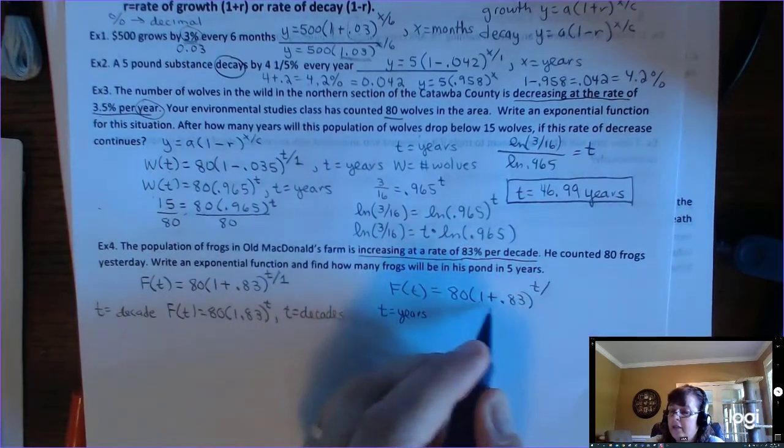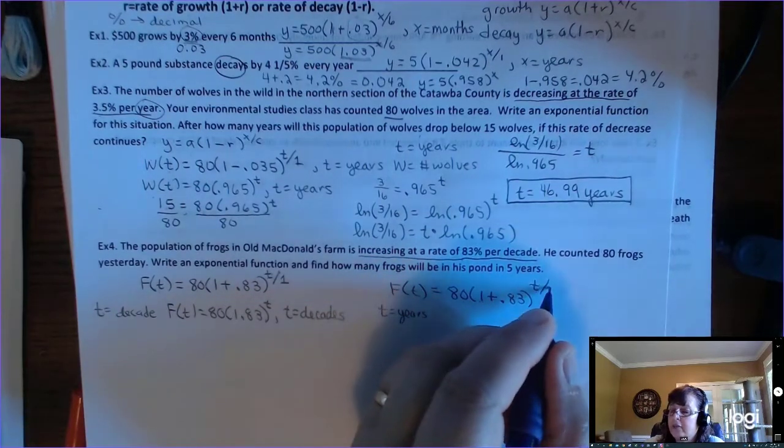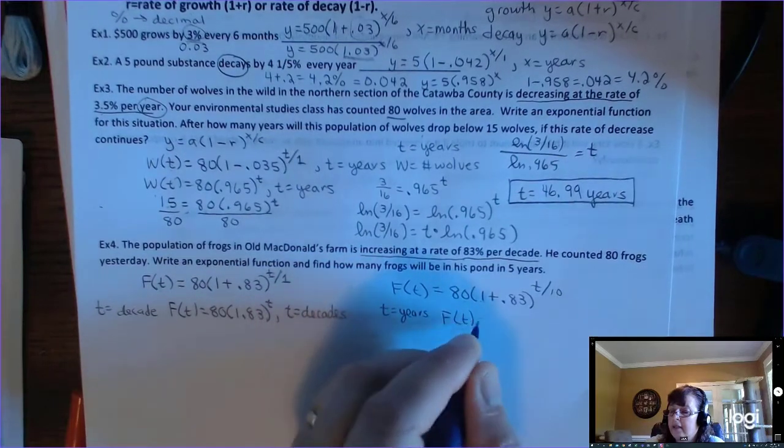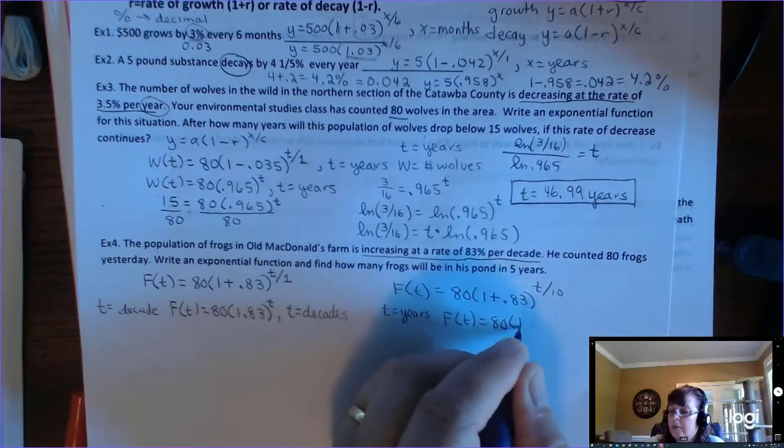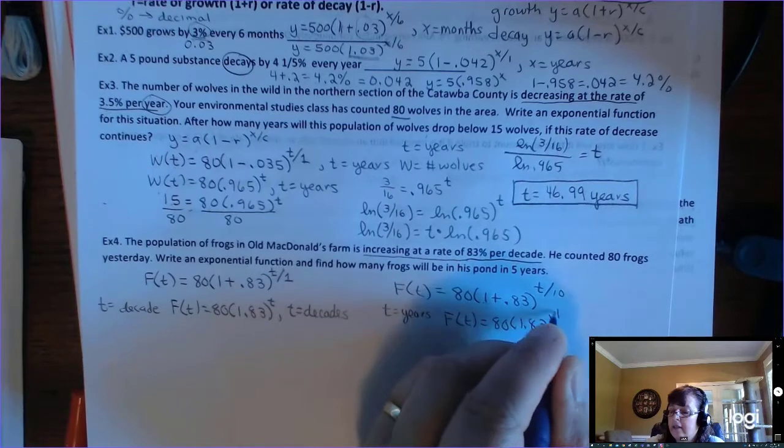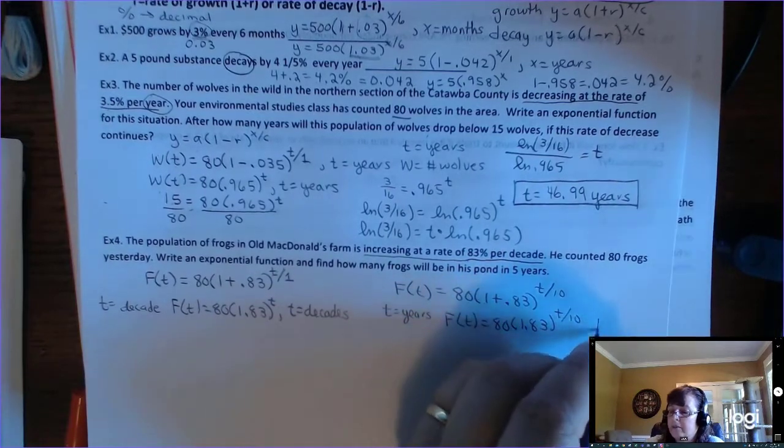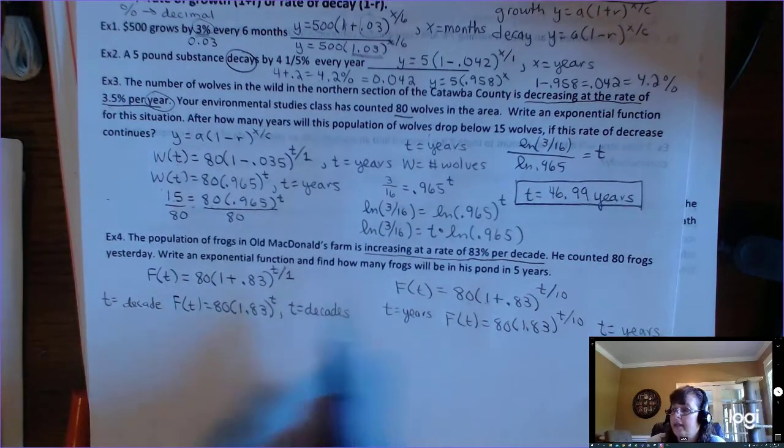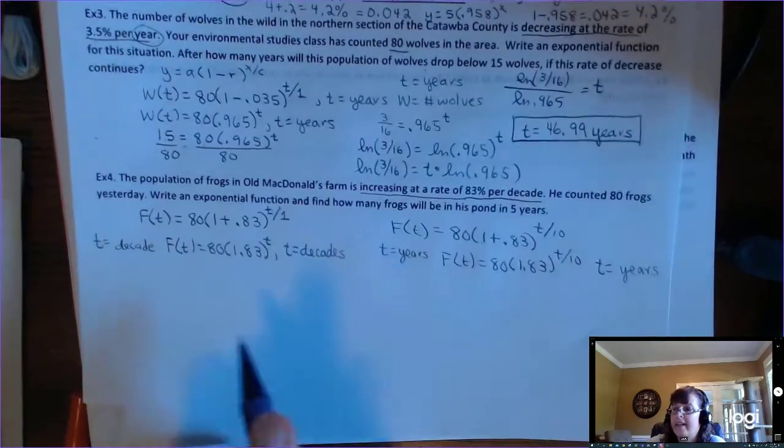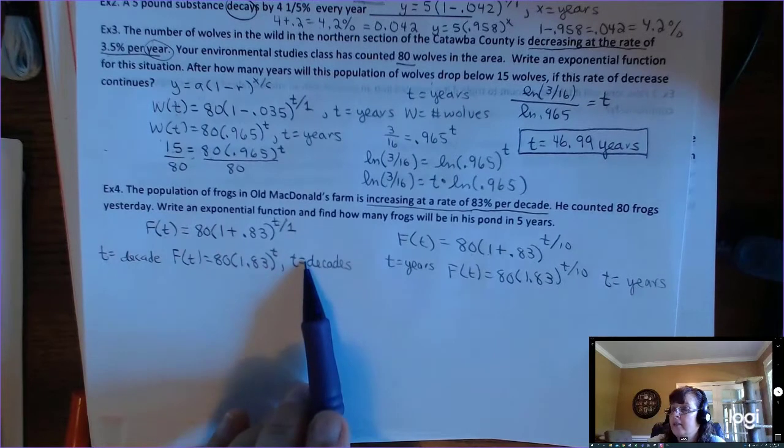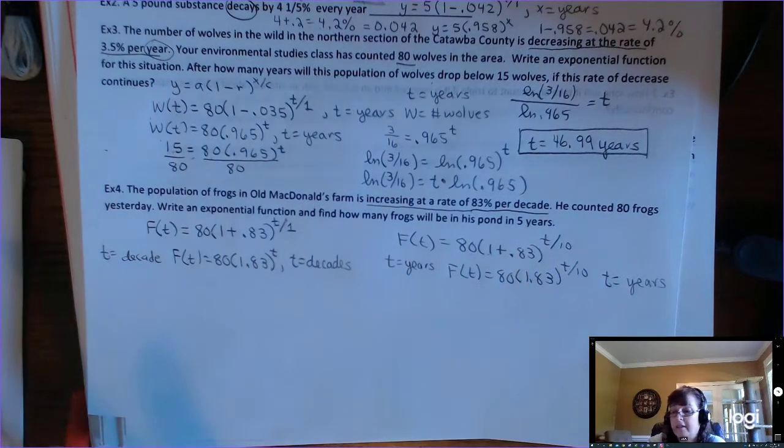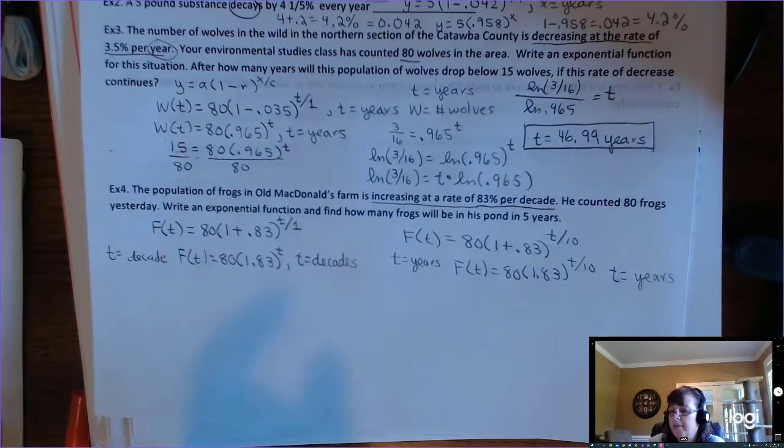So then your initial value would be 80. Your 1, that makes sure you pick up all 100% of that 80 plus 0.83 to the t, but you can't use that multiplier, that growth factor, until 10 years have passed. So what is the only thing different about these two? See, which, who's right? See, if you do this, you have to tell me t's in decades. If you do this, you have to tell me t is in years. If you don't, then I think you made a mistake. You have to tell me what you're letting t be. Now, let's see if they both work out the same.